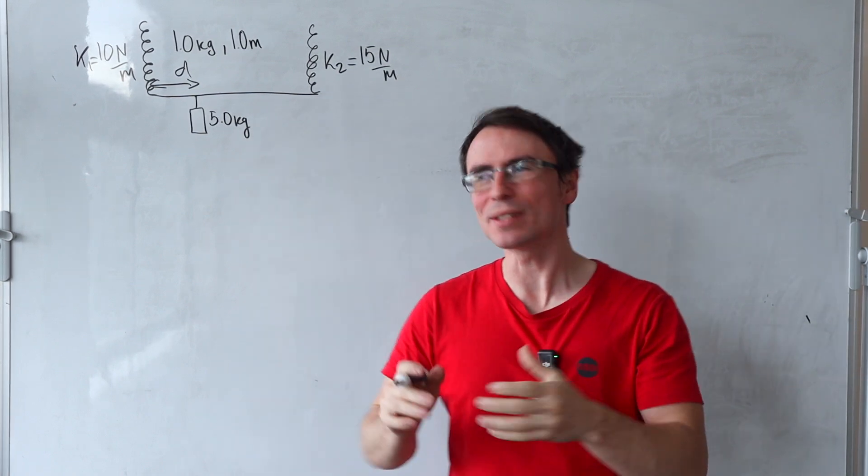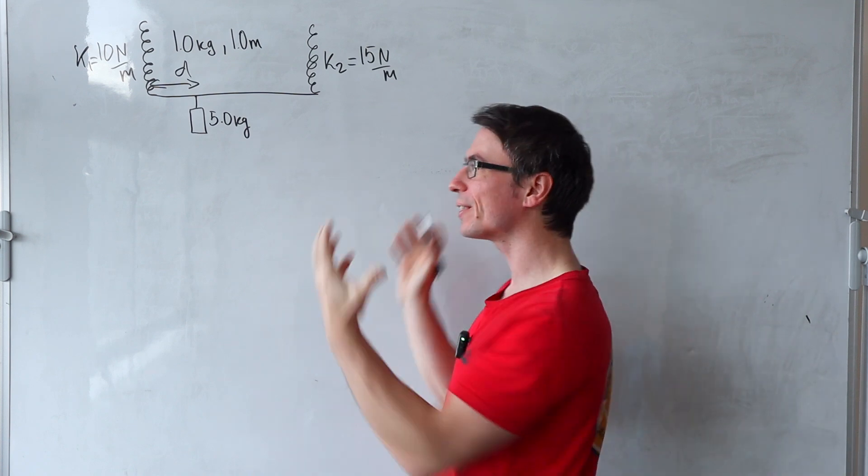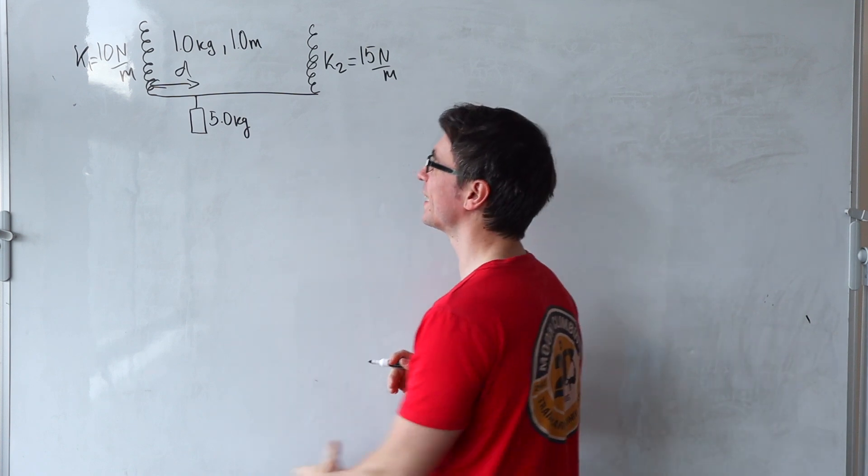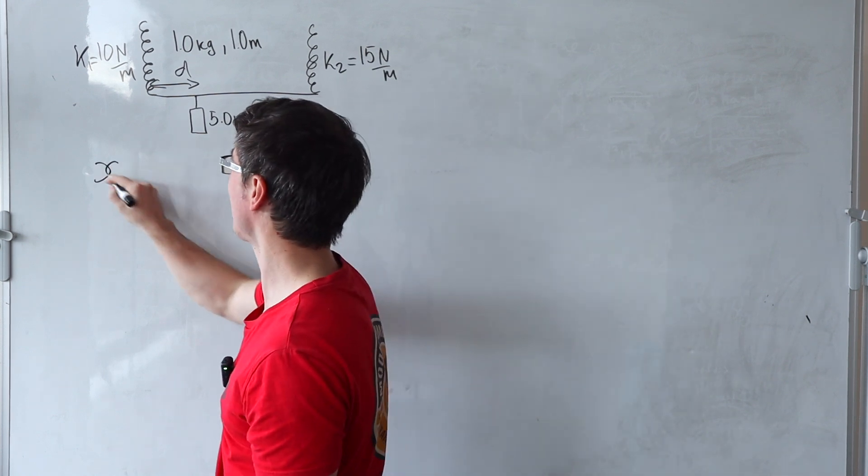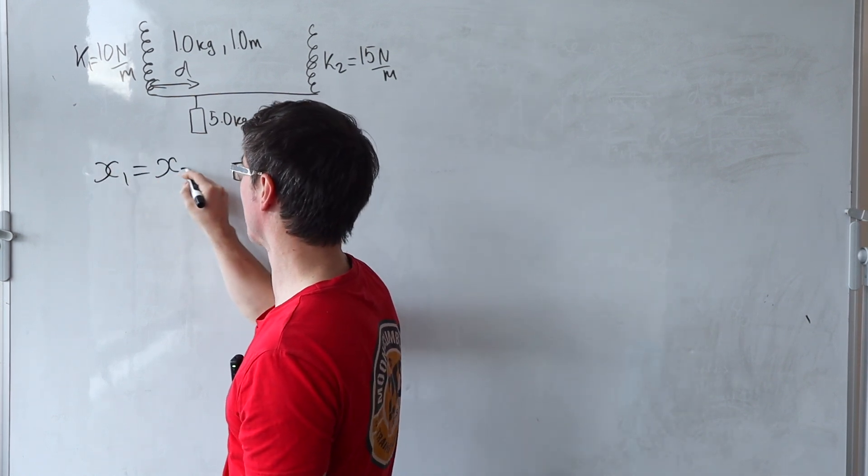The key to this problem is realizing that whenever our system is balanced, the extension of spring one has to equal the extension of spring two.